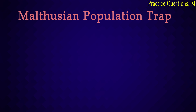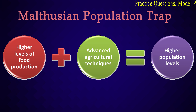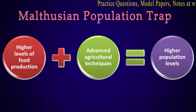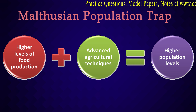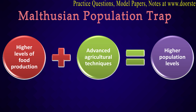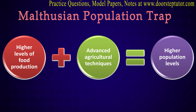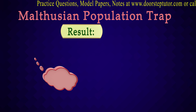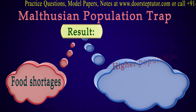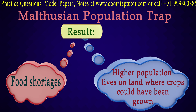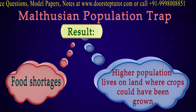Coming to a different concept — the Malthusian population trap. What he talks about is that when there is a high level of food production combined with advanced techniques of agriculture, it gives rise to high population levels again because the availability of food has become very easy. There is no struggle to get food, and in turn it gives rise to further population growth, leading to food shortage again. This high-level population then builds houses on the land where crops were supposed to be grown.